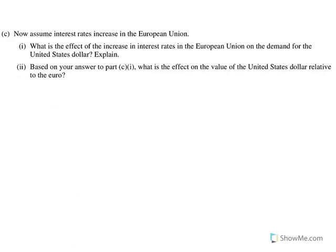Finally, on part C, it says: assume instead that interest rates increase in the European Union. For C part i, what is the effect of the increase in interest rates in the European Union on the demand for the United States dollar? They're being specific here with demand or supply because with interest rates it's a double shift on both markets — for the euro and the dollar. So they're being very specific on what they want: demand for the dollar, and we have to explain.